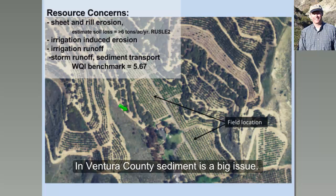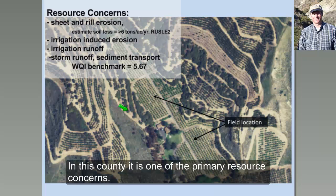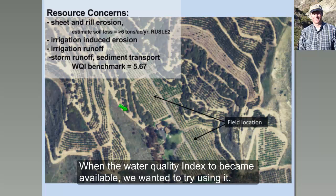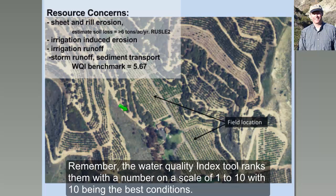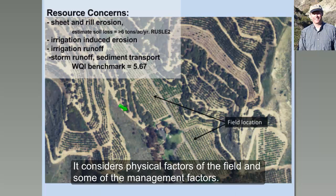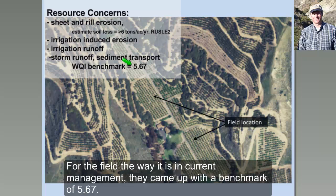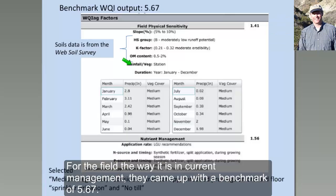Water quality in Ventura County — sediments are a big issue and one of the primary resource concerns in this county. When the water quality index tool became available, we wanted to try using it. The water quality index tool generates a number on a scale of one to ten, with ten being the best conditions. It considers physical factors of the field and some management factors. Just for the field in its current management condition, I came up with a benchmark water quality index of 5.67.